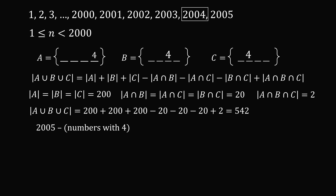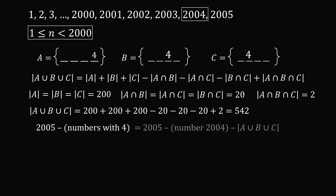Finally, we take 2005 — the number displayed on the faulty odometer — and subtract all numbers that have the digit 4. We subtract 542 numbers less than 2000, and subtract 1 for the number 2004. So we get 2005 − 1 − 542 = 1,462. And that's the answer.